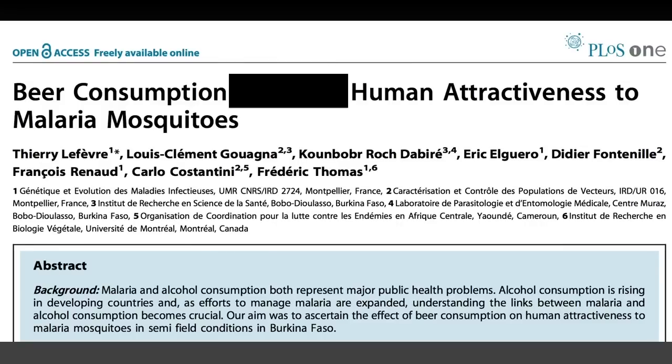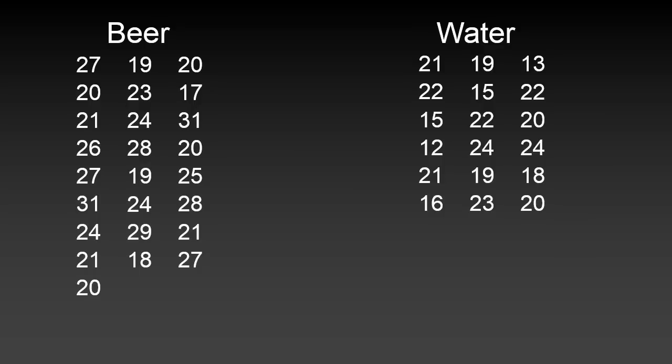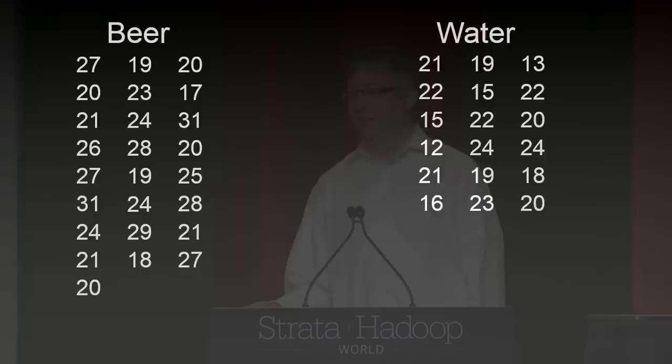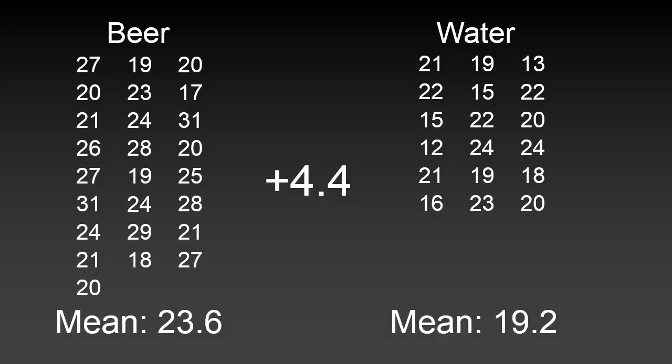I've redacted the keyword in the title so as to leave the outcome in doubt for a moment. They basically got a series of volunteers and then randomly assigned them to drink either beer or water, and then they used a device called a Y olfactometer to let mosquitoes choose to fly either toward the human subject or towards open air, and then they trapped and counted the mosquitoes. They had 25 volunteers who drank beer and 18 who drank water, and these numbers are the numbers of mosquitoes collected in the traps for each volunteer. We can compute the average number of mosquitoes in each group and subtract to find that the average person who drank beer attracted 4.4 more mosquitoes than the average water drinker. And now we have a statistical question: is a difference of 4.4 sufficient evidence to claim that drinking beer makes you more attractive to mosquitoes?